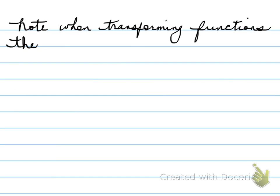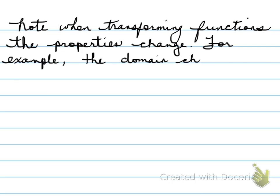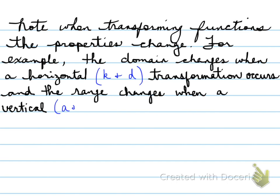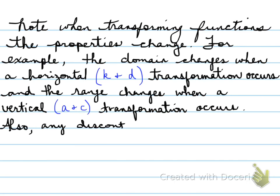Note, when transforming functions, the properties change. For example, the domain changes when a horizontal (k and d) transformation occurs and the range changes when a vertical (a and c) transformation occurs.